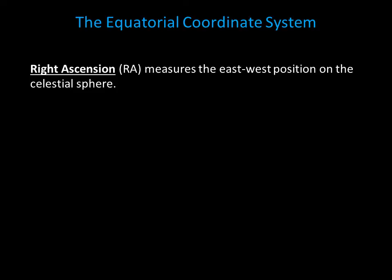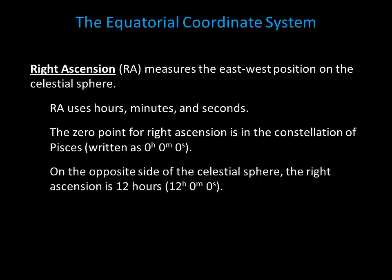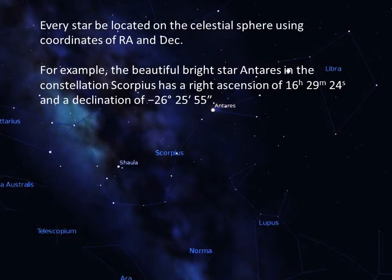Right ascension is similar to longitude in that it measures the east-west position on the celestial sphere. Instead of using degrees, right ascension is measured in hours, minutes, and seconds. The zero point for right ascension is in the constellation of Pisces, written as zero hours, zero minutes, and zero seconds. On the opposite side of the celestial sphere from Pisces, the right ascension is 12 hours, zero minutes, and zero seconds. Every star and every celestial object can be located on the celestial sphere using coordinates of right ascension and declination.